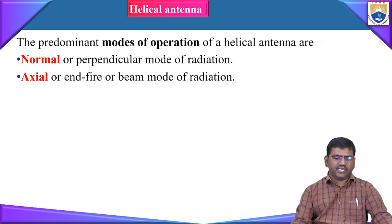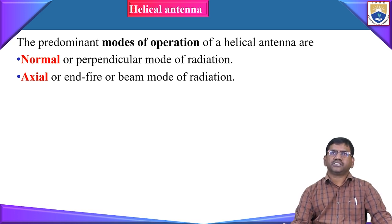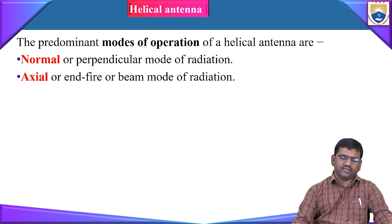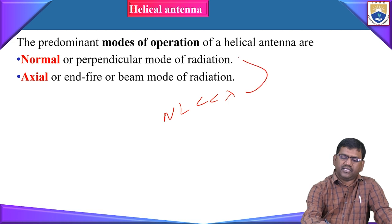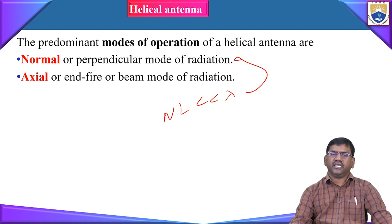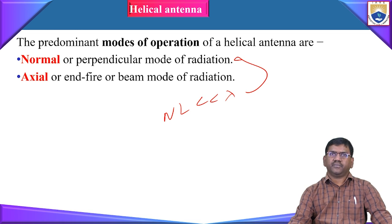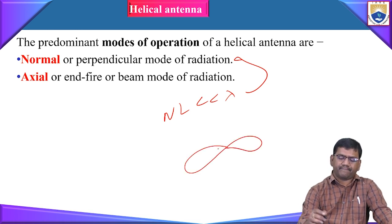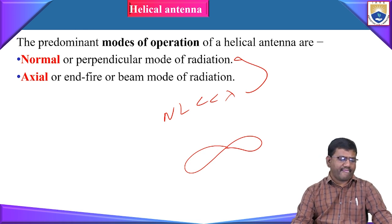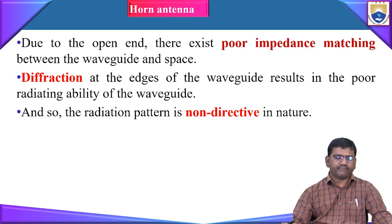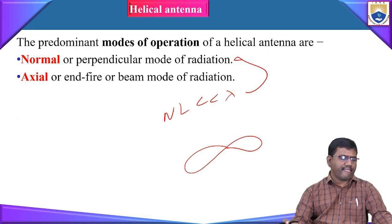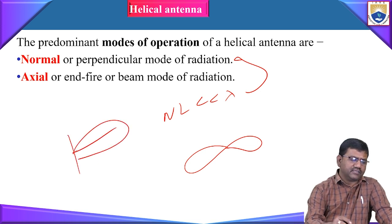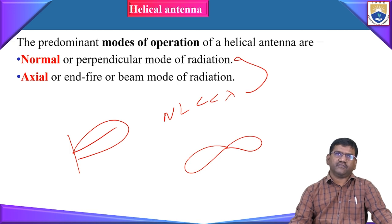The helical antenna operates in two modes: normal mode and axial mode. In normal mode (when n·l << lambda), the radiation pattern is bi-directional. In axial mode, the radiation pattern is unidirectional. Normal mode is also known as perpendicular mode of radiation; axial mode is also known as end-fire or beam mode of radiation.